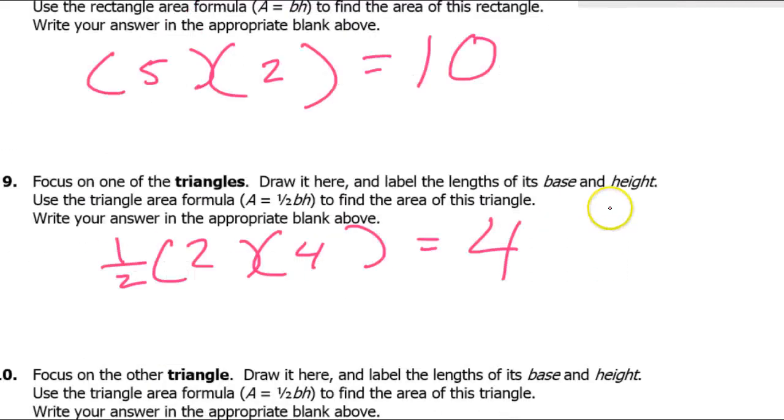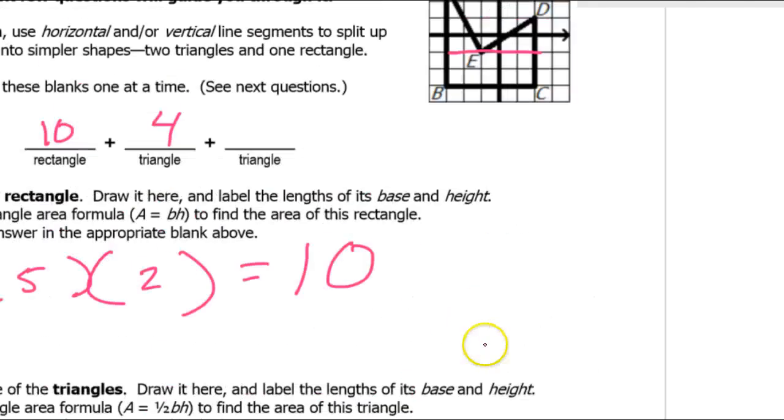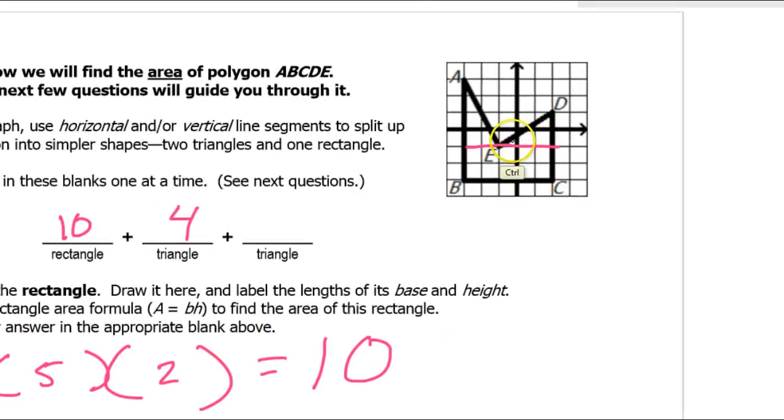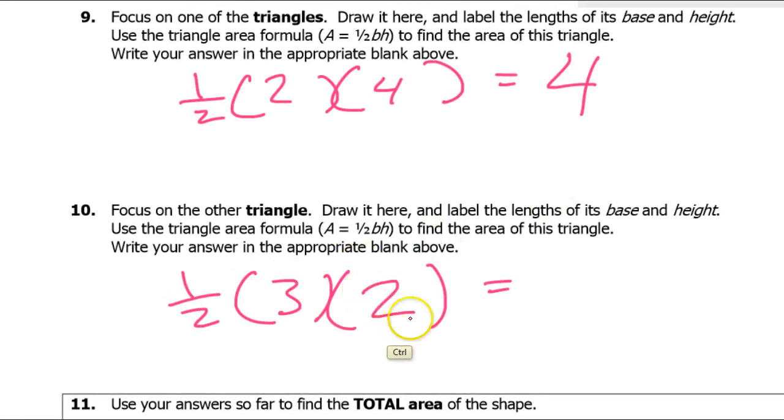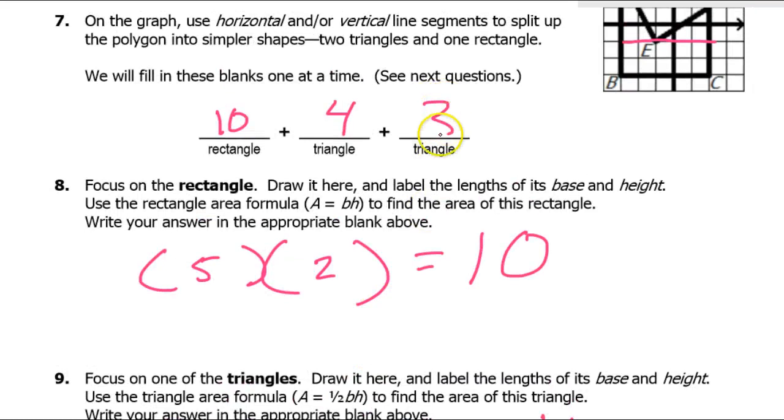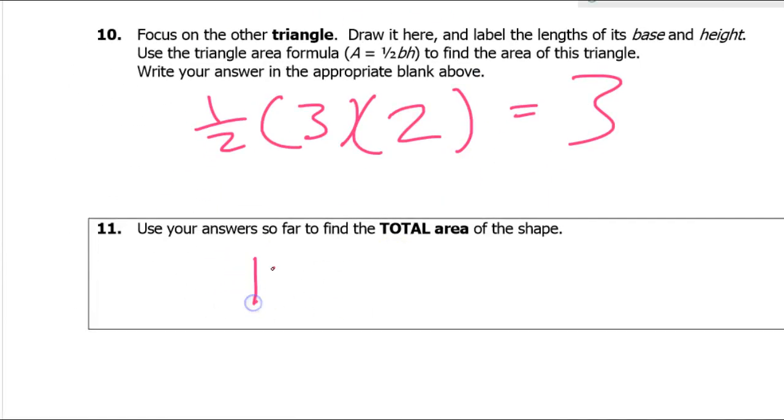Okay. Now look at the next triangle. Alright. It's again going to be one half base times height. Alright. The base of this triangle is three. The height is two. So that's going to be three. Because the one half and the two again cancel each other out and leaves three. Okay. So that means the total area is 17. Okay. 17 units squared. Any questions about that problem?